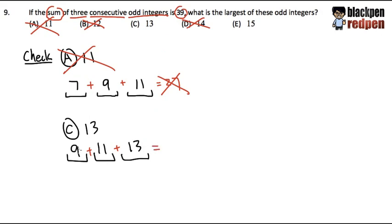And now let me add it up to see if there will be 39 or not. And let's do it. 9 plus 11 is 20. 20 plus 13 is 33. Well, I didn't end up with 39. So C is not the answer neither.